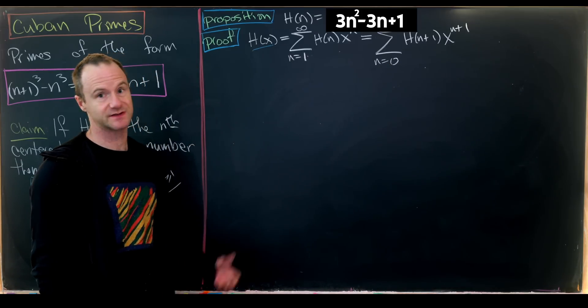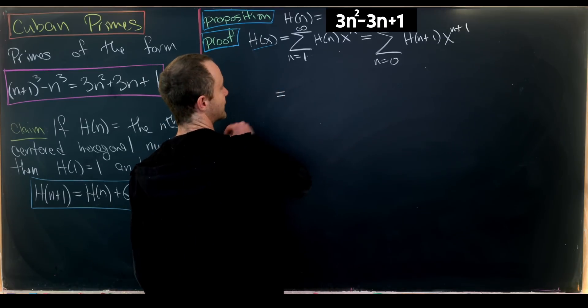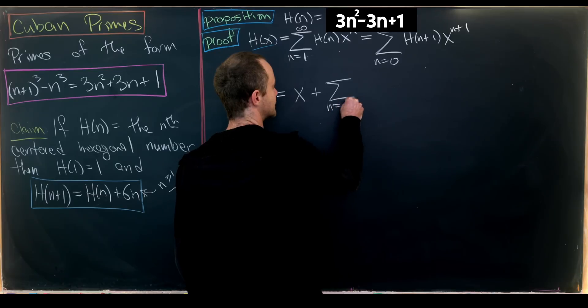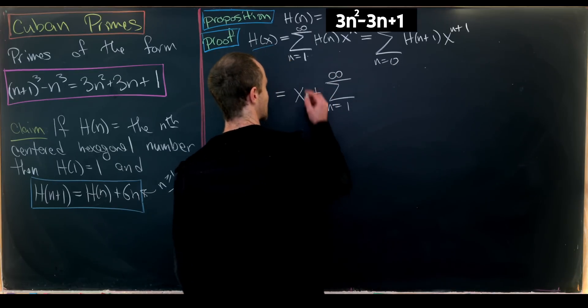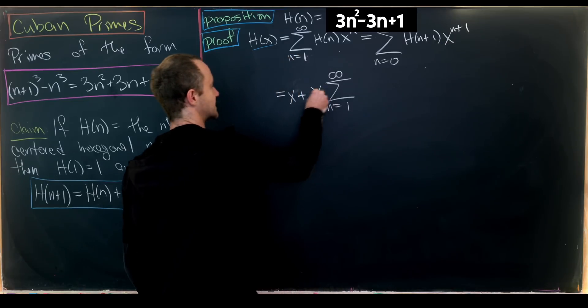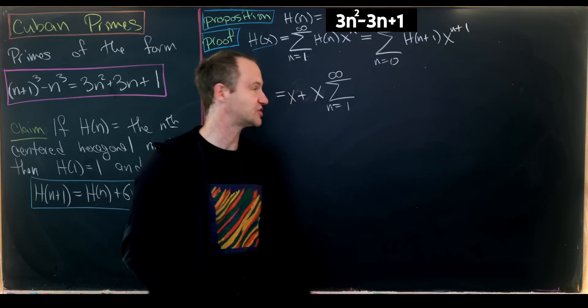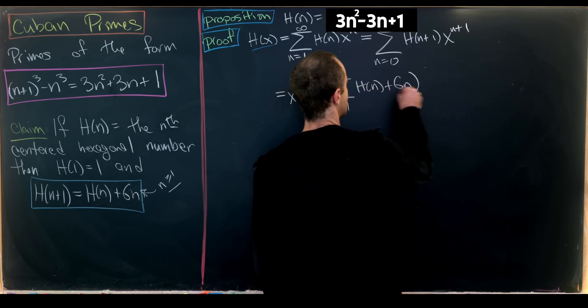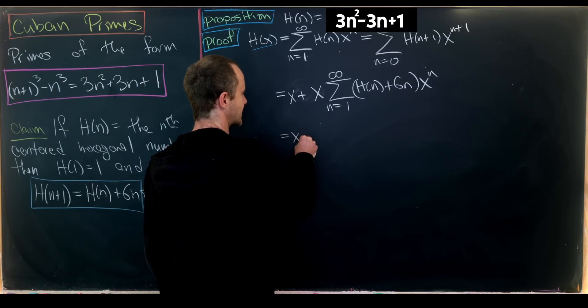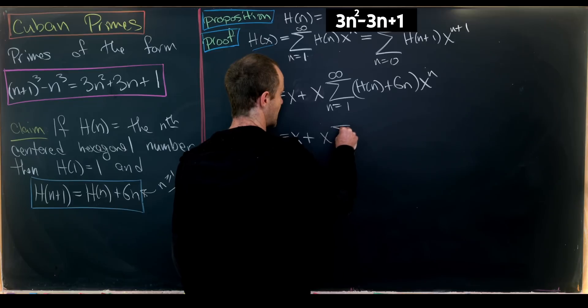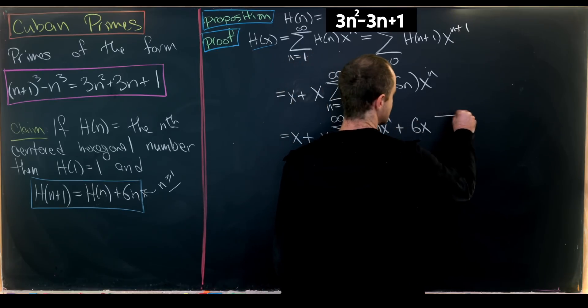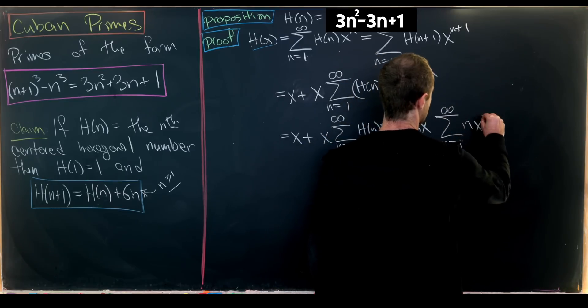The recursion applies for n ≥ 1. Taking out the 0th term gives us h(1)·x = x. Then we have Σ(n=1 to ∞) h(n+1)x^(n+1). Factoring out one power of x and applying the recursion h(n+1) = h(n) + 6n gives us x·Σ(n=1 to ∞)[h(n) + 6n]x^n.